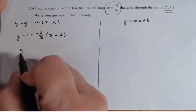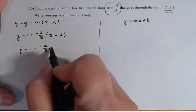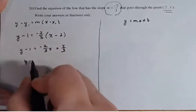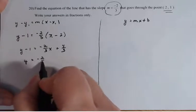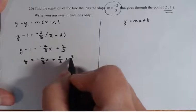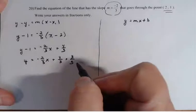And now I'm just going to solve for Y. So Y minus one equals minus two thirds X plus four thirds. Y equals minus two thirds X plus four thirds plus three thirds. Now remember, I can rewrite one with the denominator of three as three thirds.